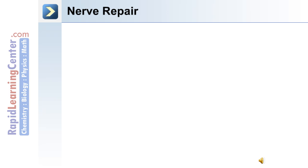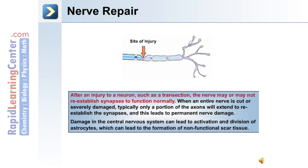Let's continue with nerve injury and nerve repair. After an injury to a neuron such as a transection, the nerve may or may not re-establish synapses to function normally. When an entire nerve is cut or severely damaged, typically a portion of the axons will extend to re-establish the synapses, and this leads to permanent nerve damage. Damage in the central nervous system can lead to activation and division of astrocytes, which can lead to the formation of non-functional scar tissue.